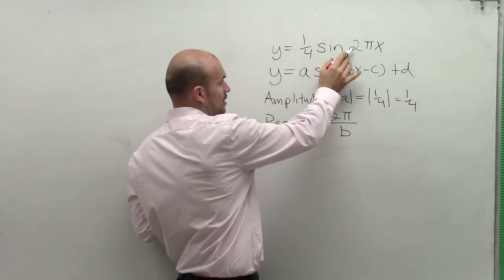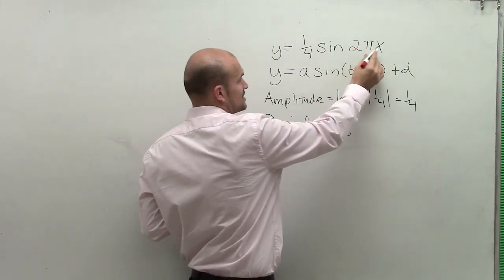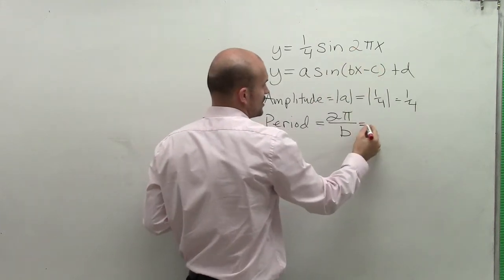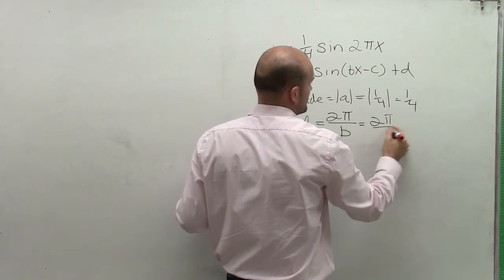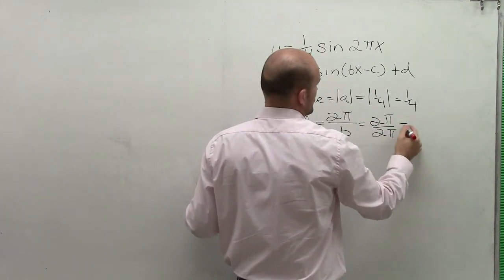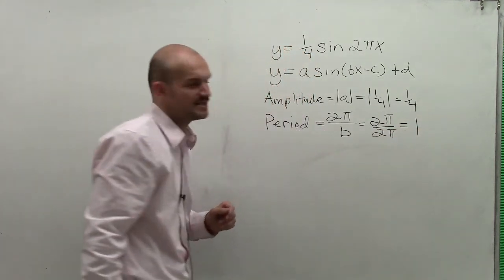Well, in this case, we look at our b and we see the coefficient is not just one term, but it's actually two terms. It's actually 2 pi divided by 2 pi. So therefore, our period in this case is 1.